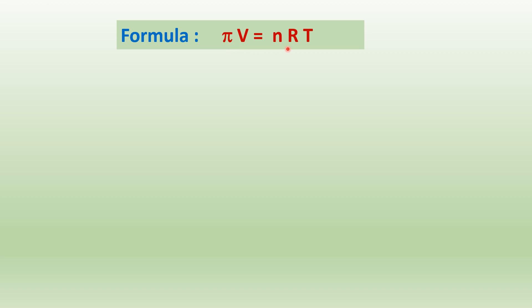That is PV equals nRT for ideal gas. For ideal solution, πV equals nRT, where π is the osmotic pressure exerted by the solution and V is the volume.